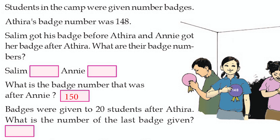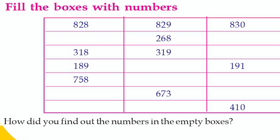Salim got his badge before Adira, so his number is 147. Annie got her badge after Adira, so her number is 149. Badges were given to 20 students after Adira. The last badge number given is 150 plus 20 equals 170. Fill the boxes with numbers.